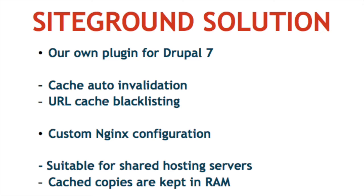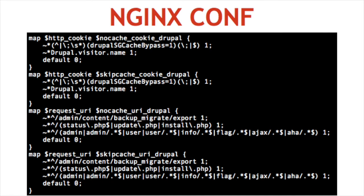What we're really proud of is that this solution is suitable for shared hosting machines with 100 or 200 customers. You can use it on a cluster or a single dedicated server. Cached copies of pages are kept in RAM, which is much faster. Here is some of the Nginx configuration we use — we're using maps, and we've defined certain conditions for when to cache a page or not.